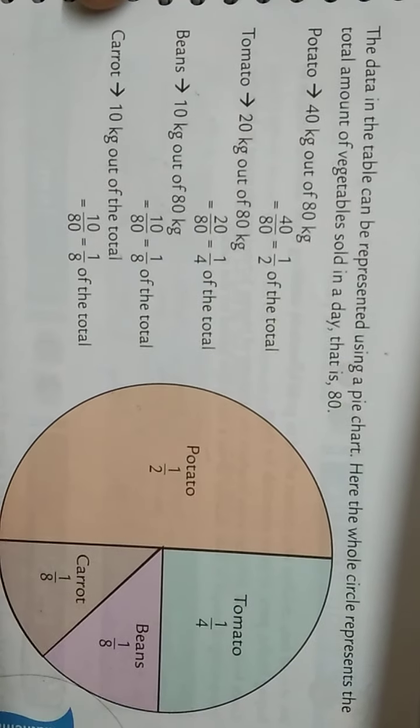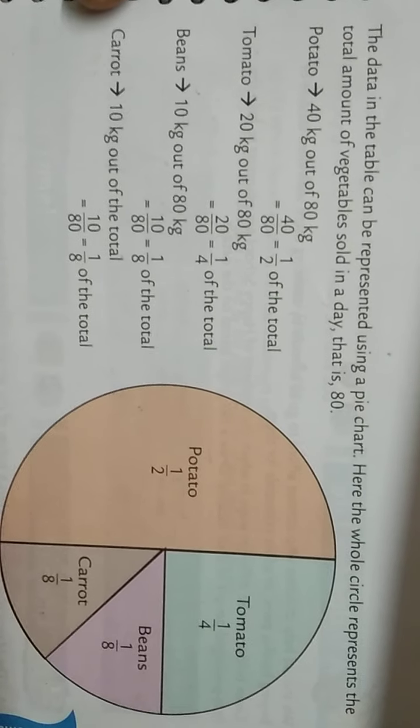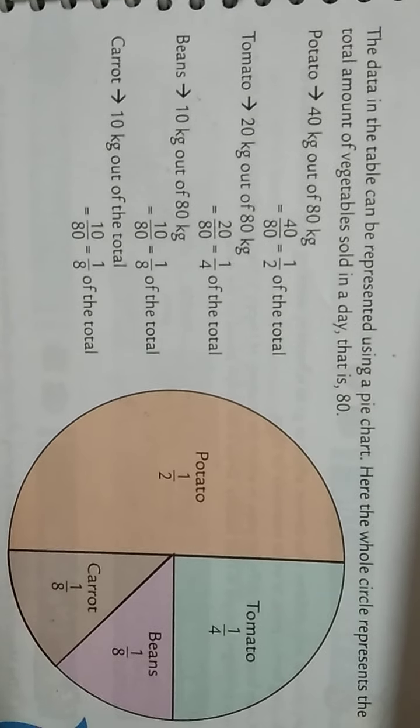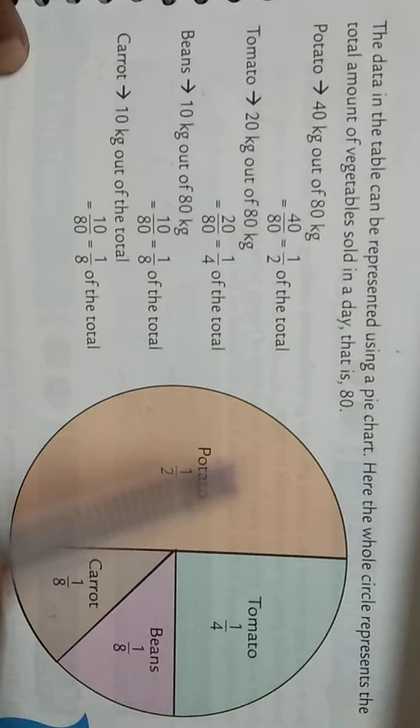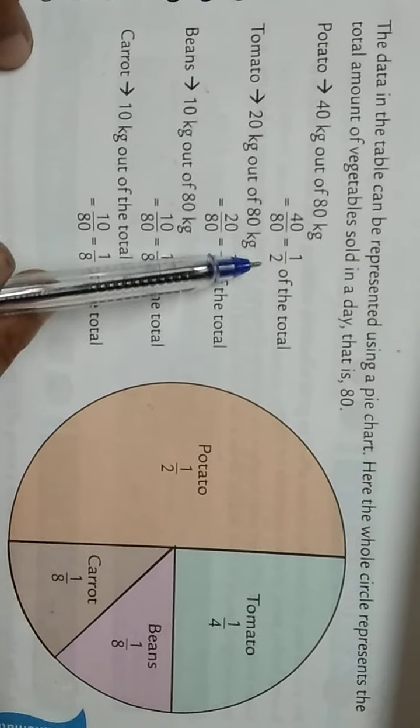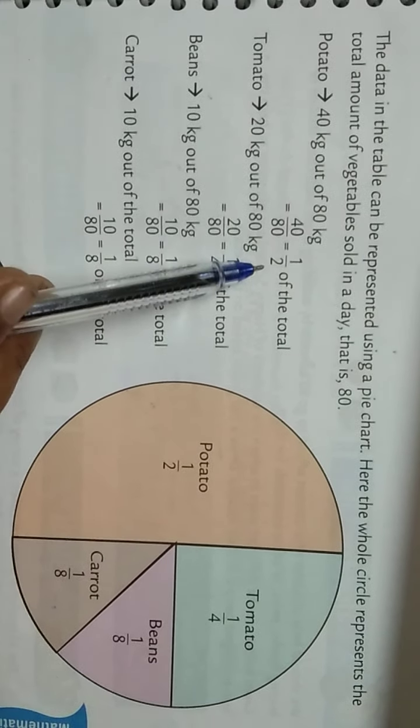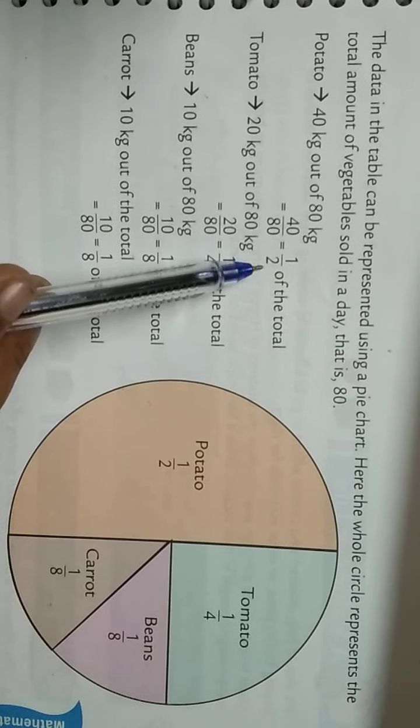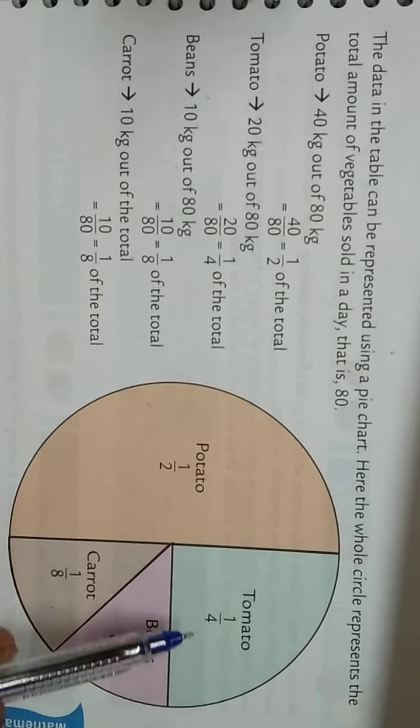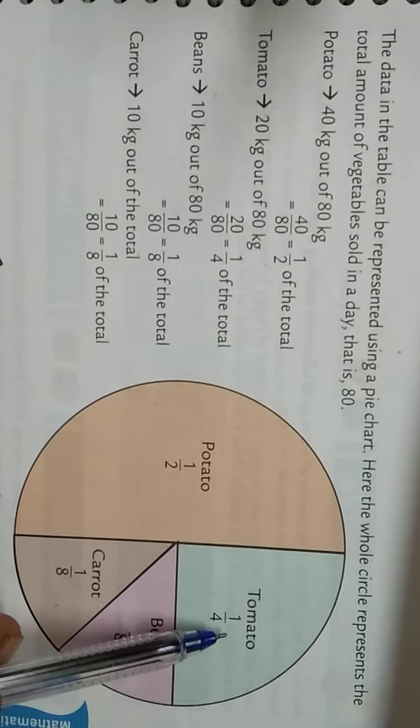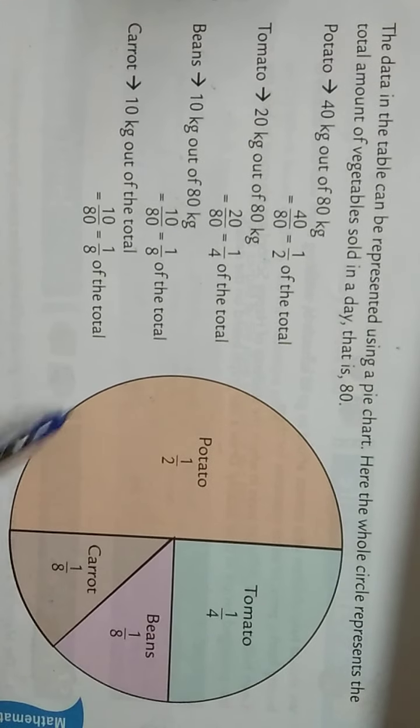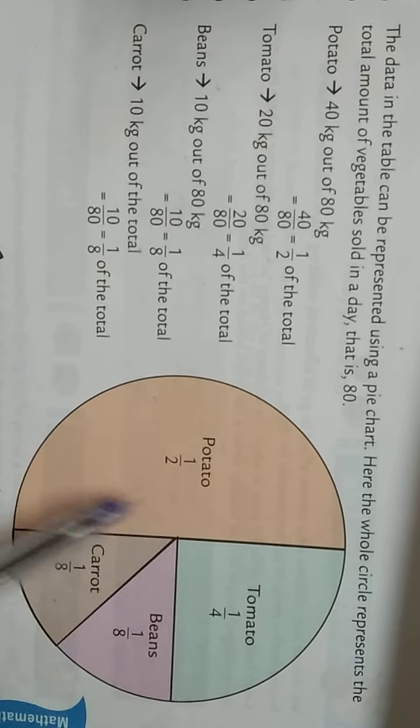First, the given data should be converted into fractional form, which means angles in degrees. Using a protractor, we draw these angles and portions. That is the way of drawing a pie chart.